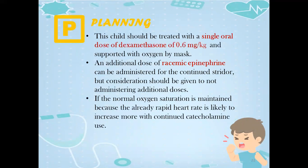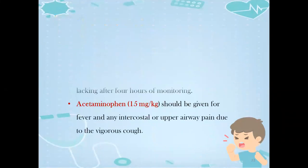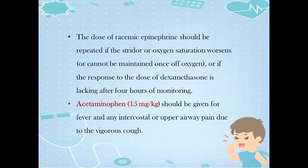For the treatment plan, this child should be treated with a single oral dose of dexamethasone of 0.6 mg per kg and supported with oxygen by mask. An additional dose of racemic epinephrine can be administered for continued stridor, but consideration should be given to not administering additional doses if normal oxygen saturation is maintained, because the already rapid heart rate is likely to increase further with continuous catecholamine use. The dose of racemic epinephrine should be repeated if stridor or oxygen saturation worsens, or if the response to dexamethasone is lacking after four hours of monitoring. Acetaminophen 15 mg per kg should be given for fever and any intercostal or upper airway pain due to vigorous coughing.